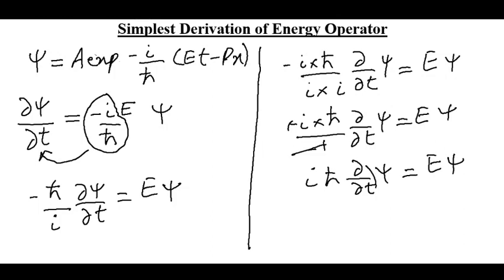Now, if we compare these two sides, we have the energy operator of quantum mechanics which can be written as iota h bar partial over partial t.